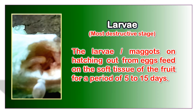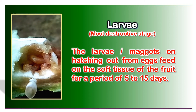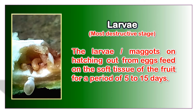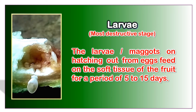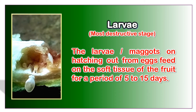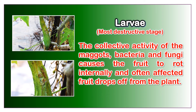The larvae or maggots, on hatching out from eggs, feed on the soft tissue of the fruit for a period of 5 to 15 days. The collective activity of maggots, bacteria, and fungi causes the fruit to rot internally, and the affected fruit often drops off from the plant.